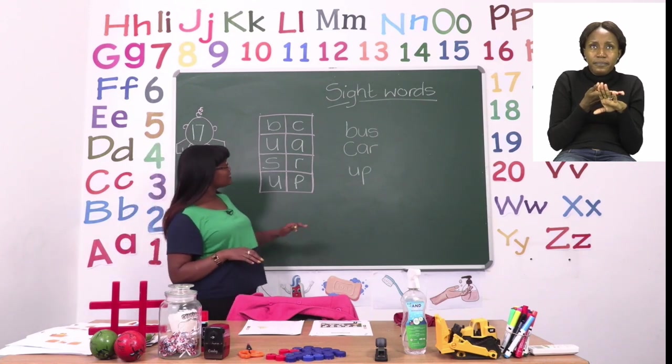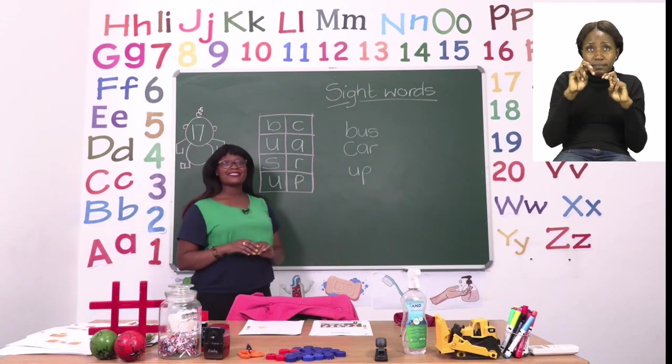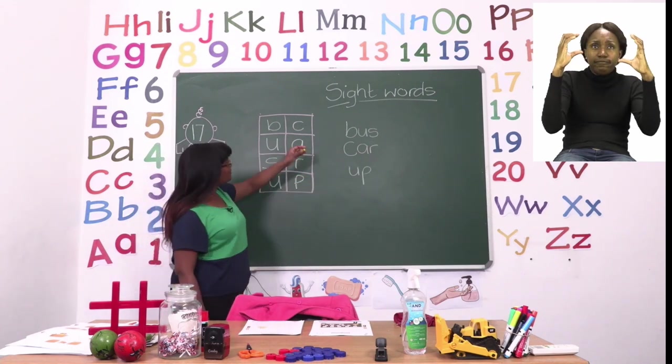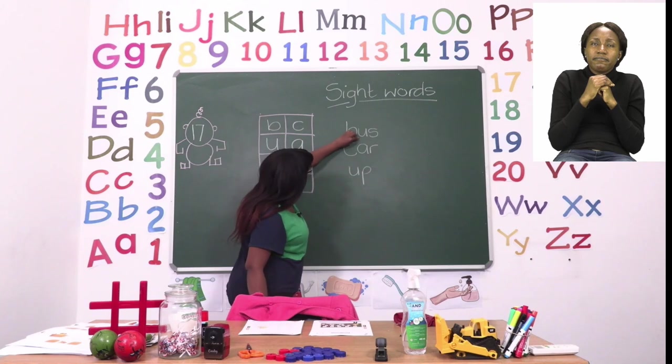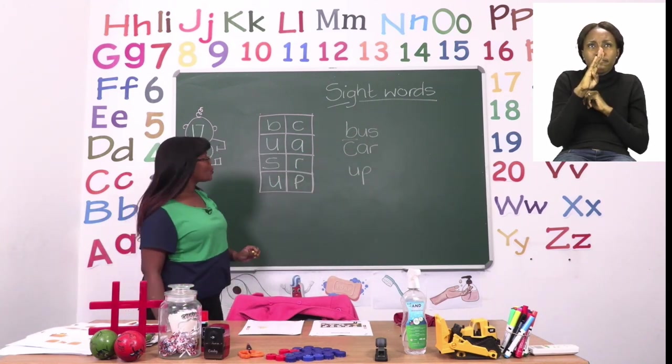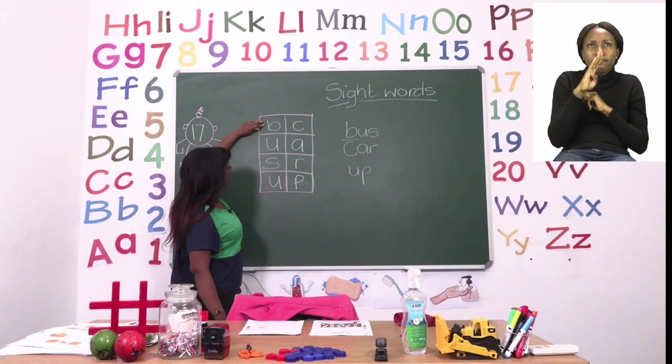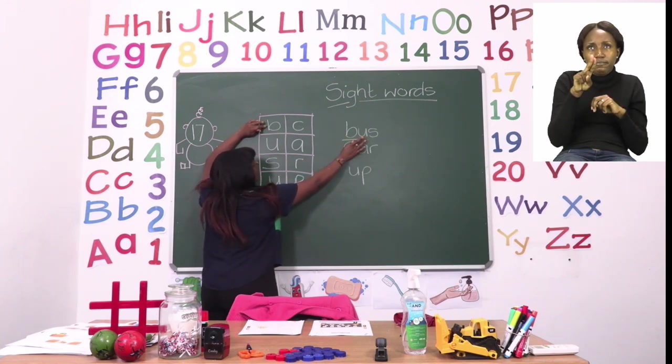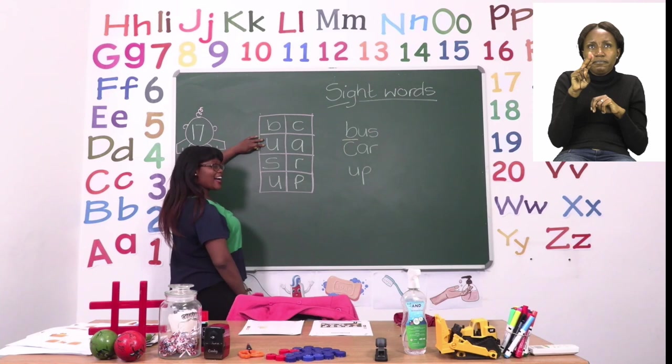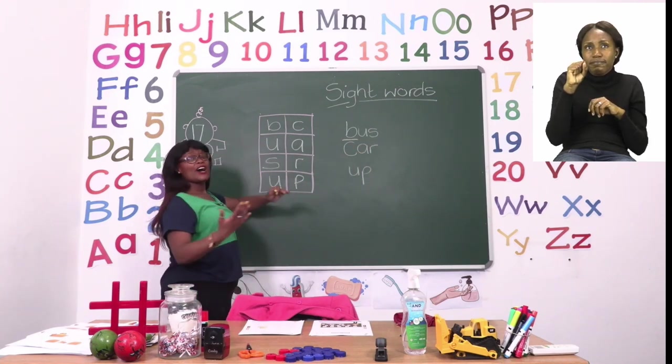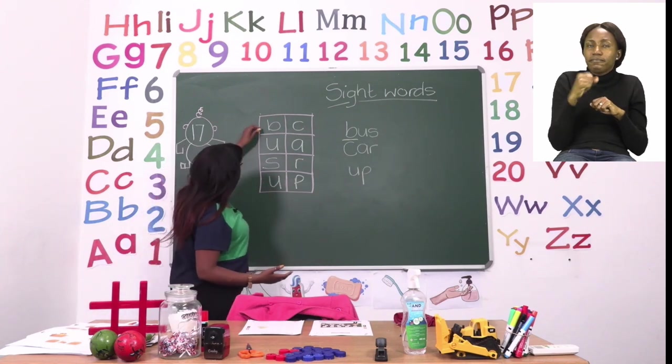We're going to look for these words. We're going to start with the word bus. So we're going to first underline the first letter which is B. So we're going to look for a B. And then after that we are looking for a U. And a U is right here. Then the last one we're looking for is a S. Now we have found our word bus.